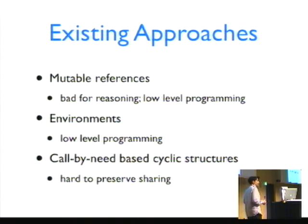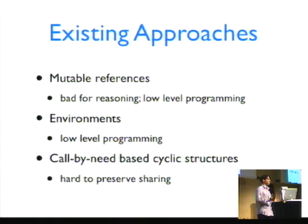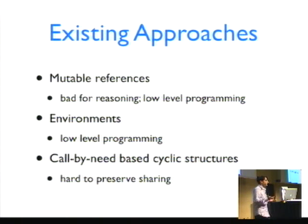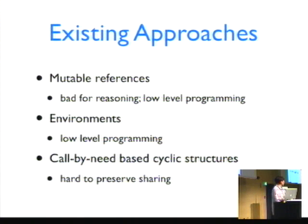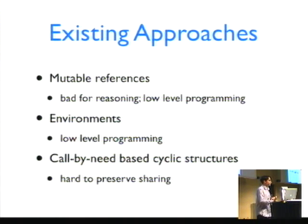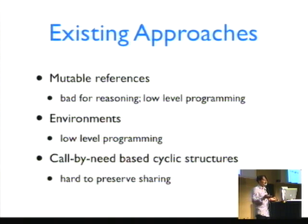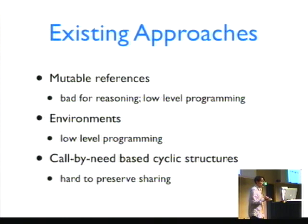There are actually a number of things that you can do. One of them is to just resort to the imperative solution, so you can use mutable references and pointers, and you can model your graphs with pointers. One of the things with this is that it's kind of a low-level programming style, so you break referential transparency, and it's not as nice as programming with trees.